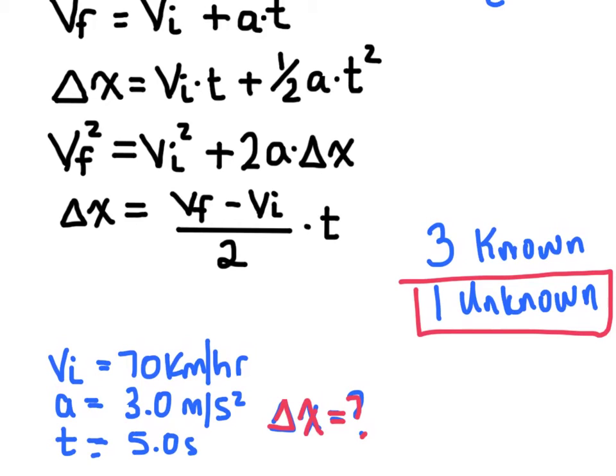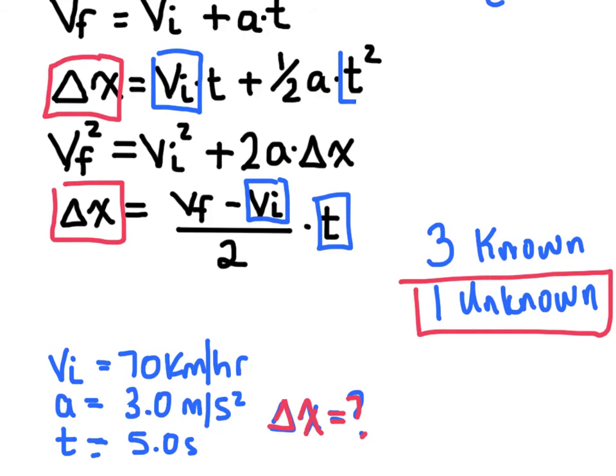Now I want something that's going to give me the delta x. And so I can already see there's two possibilities here that could give me that. And so what I want to do is match up my known variables. I do know v initial, so I'm going to circle that in these two equations here. And I do know time, so I'm going to circle time in those two equations as well.